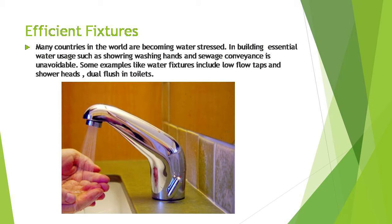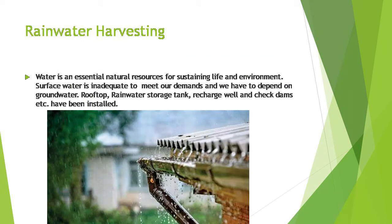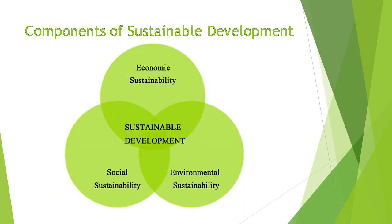Crop rotation helps to increase fertility and assist in controlling diseases and insects. Efficient fixtures address water stress — in many countries there is water scarcity. In buildings, essential water usages such as showering and sewage conveyance are unavoidable. Examples include water fixtures like low-flow taps, shower heads, and dual flush toilets, which help to conserve water. This also comes under sustainable development.